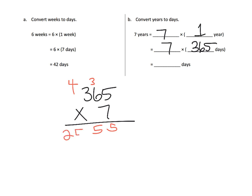And so, our answer is 2,555 days. And that actually makes sense, because if you think about it, 365 is pretty close to 400, and 400 times 7 is 2,800. So, my estimation, my answer using estimation, my answer is probably correct.